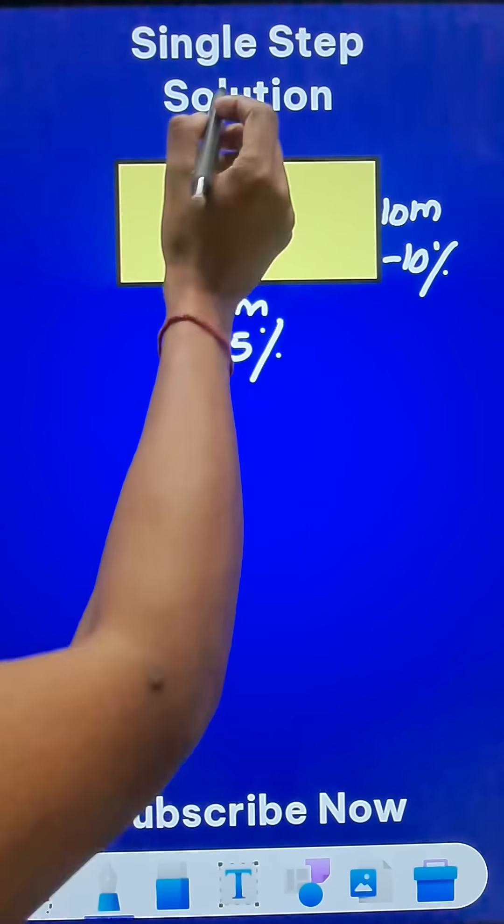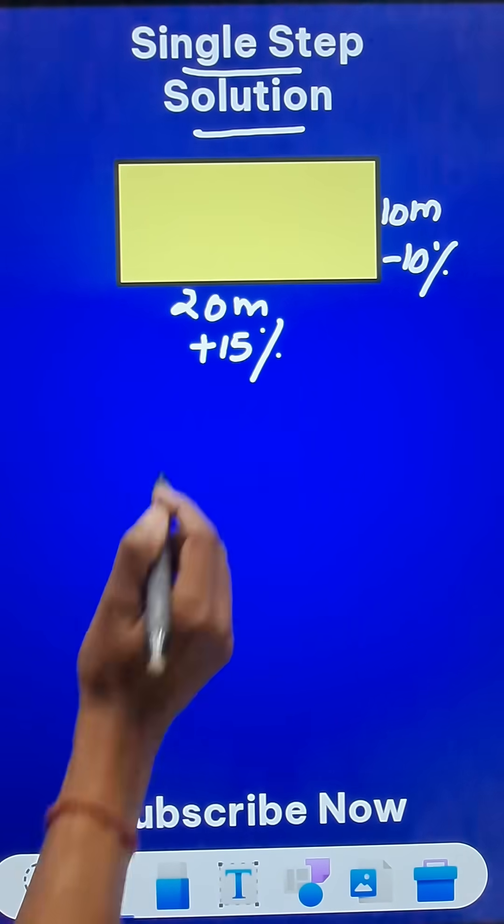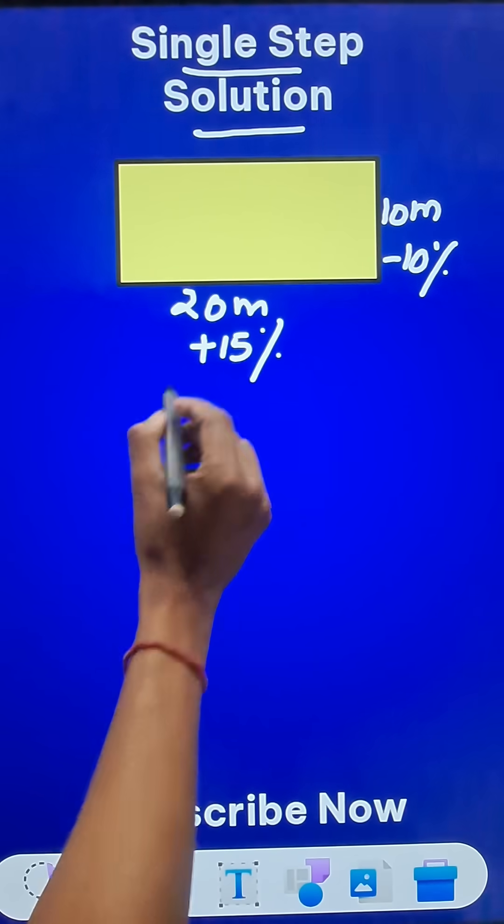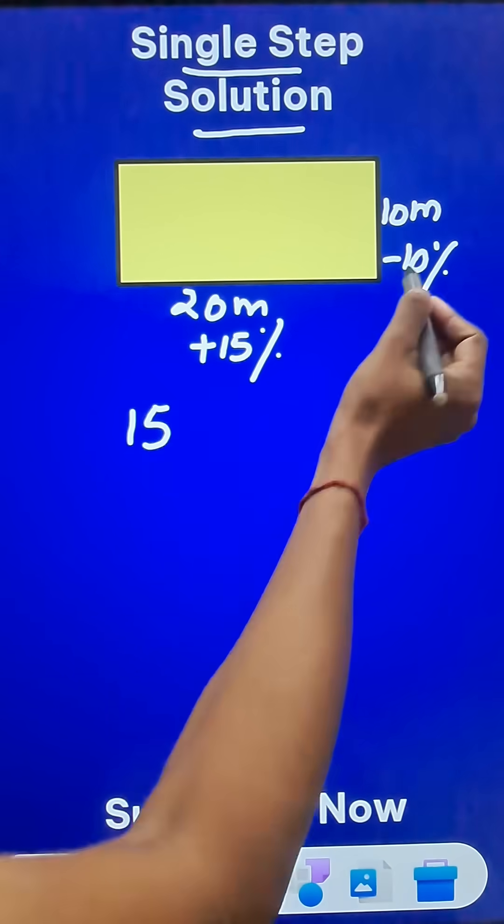Now to avoid all that we have a single step solution. What you need to do is here we have plus 15 so write 15, then we have minus 10% so write minus 10.